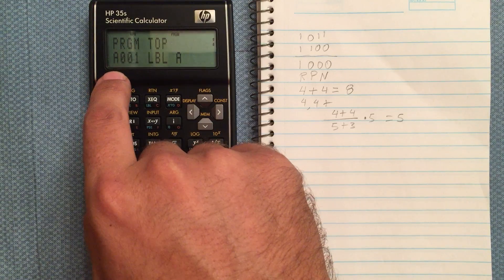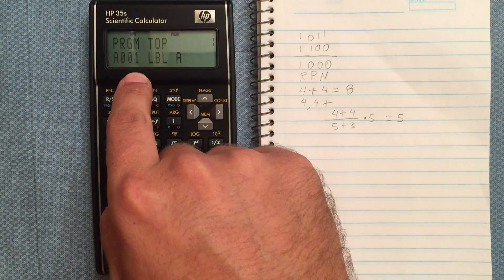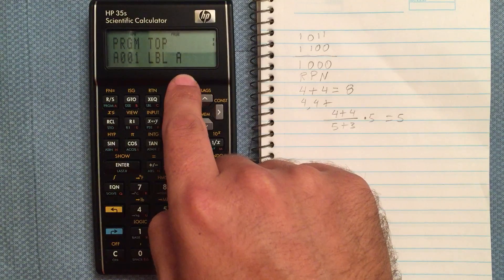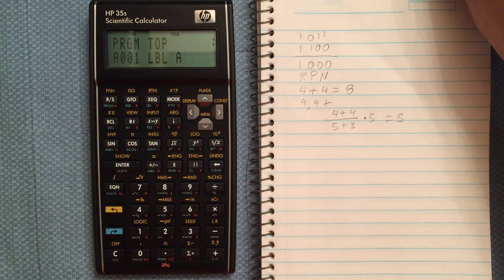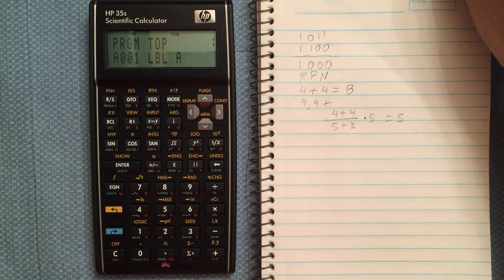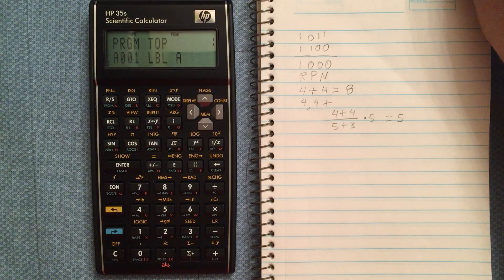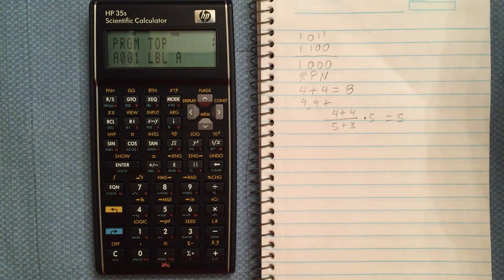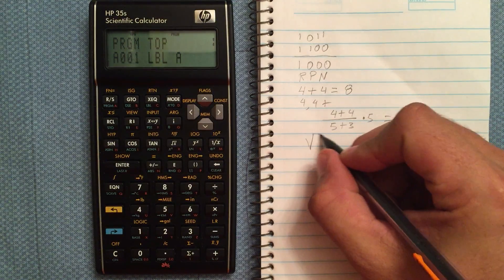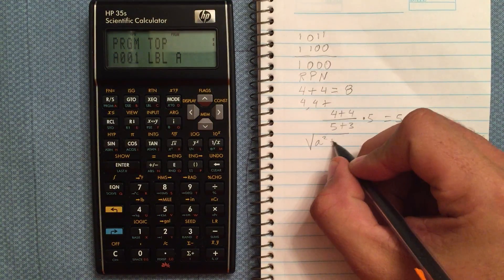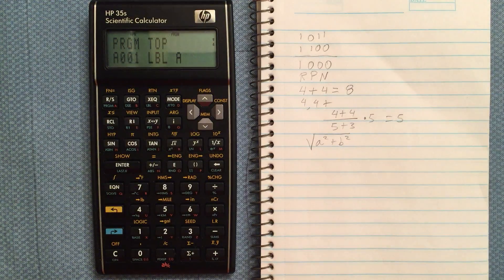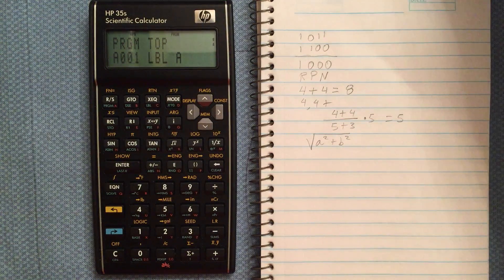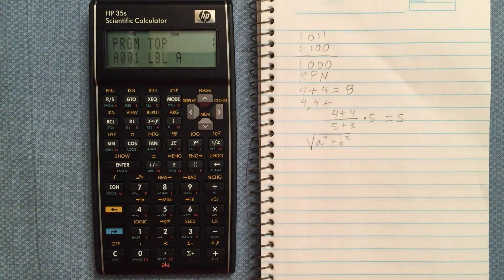It automatically puts in 001, so that's the first line of our program. Let's say we want our program to input two numbers, take the square of them, and then the square root of the result. So we just want square root of a squared plus b squared. Maybe we're finding the hypotenuse on a triangle.